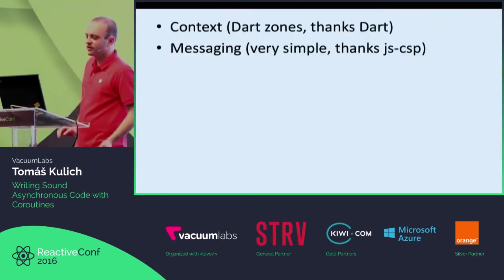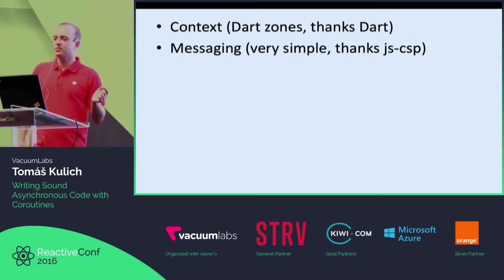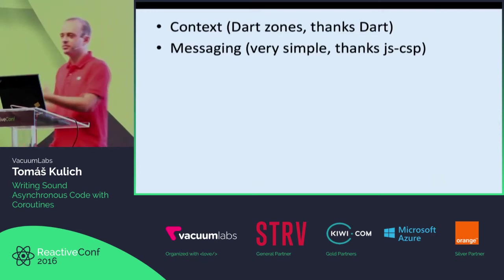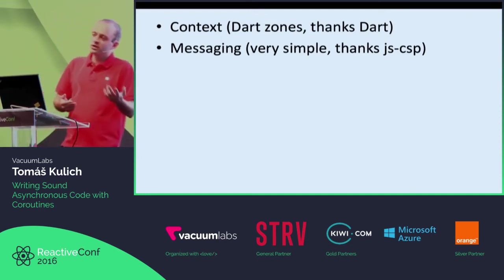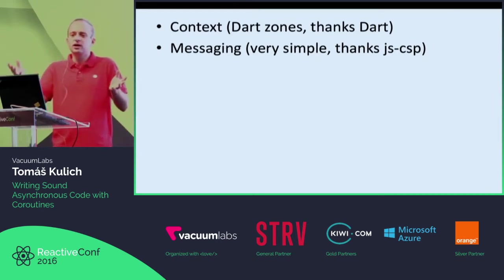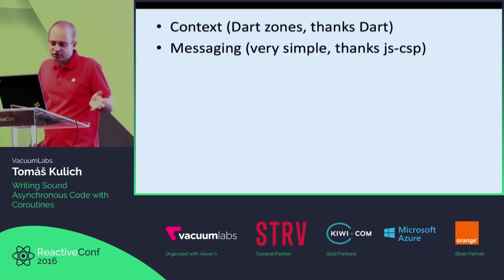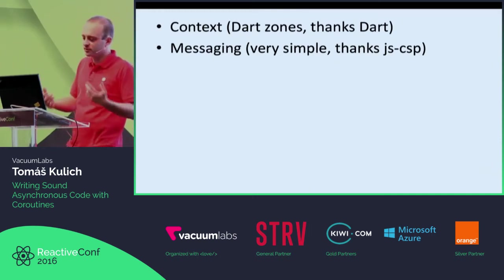Then we have a messaging system similar to what CSP is. I used CSP for some time and noticed I don't like every piece of the library, so I implemented only the small subset of CSP I really use and like. You can create channels, push messages to channels — pushes are always non-blocking — and then you can yield messages from channels, which can be blocking. This is a great mechanism for synchronizing multiple coroutines.